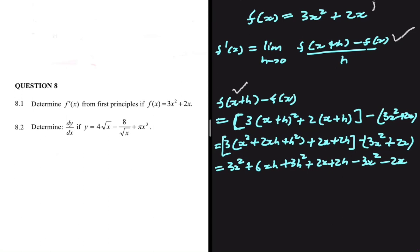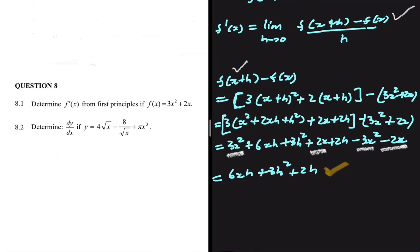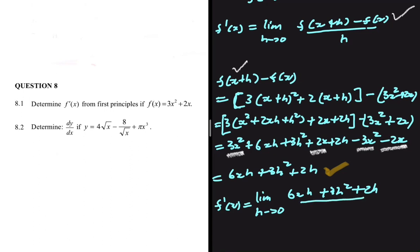Every term that doesn't have h we expect to fall away. We have 3x squared minus 3x squared and 2x minus 2x, so those cancel. We're left with 6xh plus 3h squared plus 2h. We can then substitute this into f prime of x, which equals the limit as h tends to 0, with 6xh plus 3h squared plus 2h on the numerator, all divided by h.